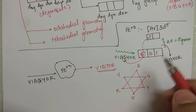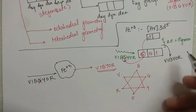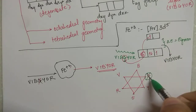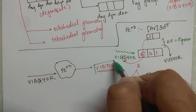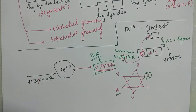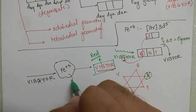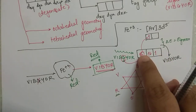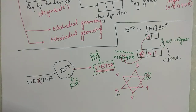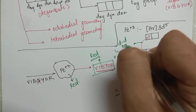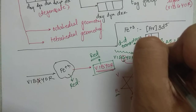Now this combination — violet, indigo, blue, yellow, orange, red — without green: the complementary color of green is red. So this combination will appear red to you. Therefore Fe³⁺ ion will appear red. This is why d-block ions are colored — because a d-electron jumps from one d-orbital to another d-orbital. This jump is called a d-d transition.